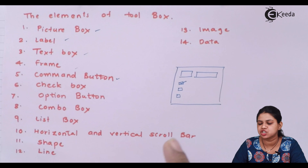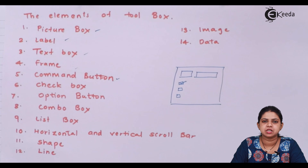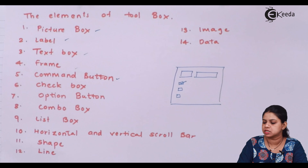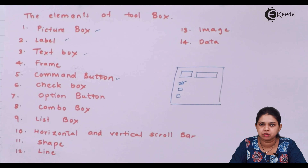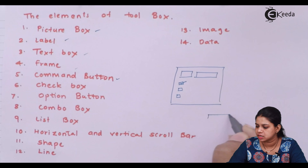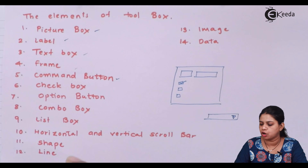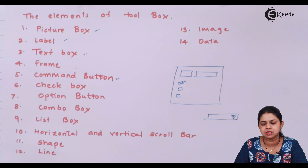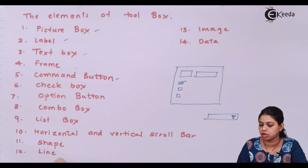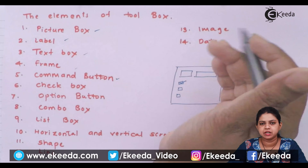Unlike check box where you can select multiple options, the option button allows you to select only one from a group of items. Combo box is a drop-down list used to select items. Combo box is editable while list box is non-editable. Horizontal and vertical scroll bars are used to scroll the form. Shape tool is used to draw various shapes like rectangles and circles. Lines are used to draw lines. Image box is similar to picture box — you can also upload images in the image box.